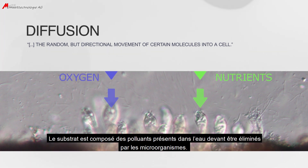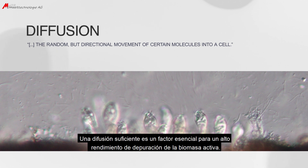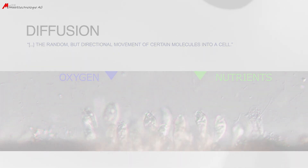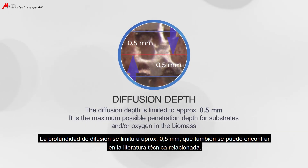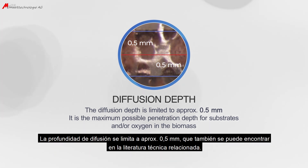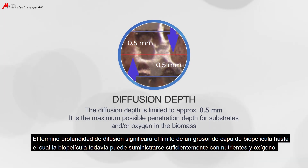Substrate refers to the pollutants present in the water which are to be degraded by the microorganisms. A sufficient diffusion is an essential factor for the removal performance of active biomass. The diffusion depth is limited to approximately 0.5 mm, which can also be found in related technical literature. The term diffusion depth means the limit of biofilm layer thickness up to which the biofilm can still be sufficiently supplied with nutrients and oxygen.